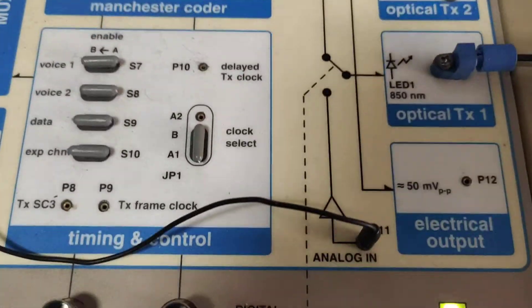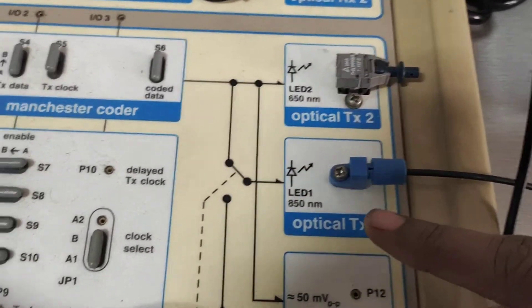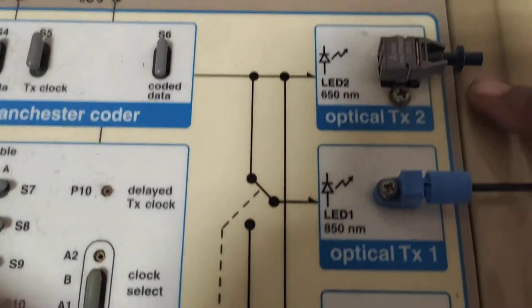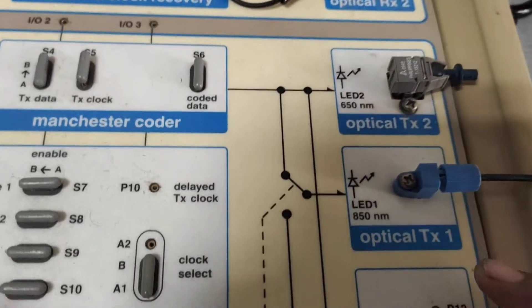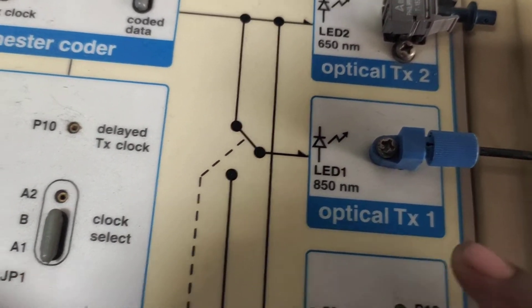And there are two Optical Transmitter Blocks available here. This is Transmitter 1 and Transmitter 2. The Transmitter 1 has an 850 nanometer LED source.